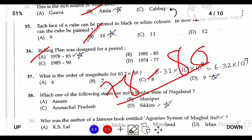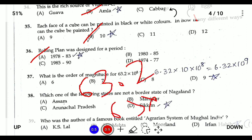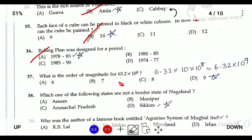Question thirty-seven: what is the order of magnitude of 6,302,000,000 (6.3 × 10⁹)? To convert to order of magnitude, express in scientific notation: 6.3 × 10⁹. Since the power is 9, the order of magnitude is 9.